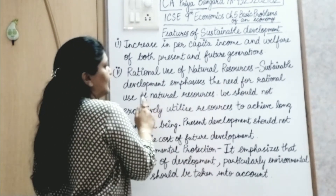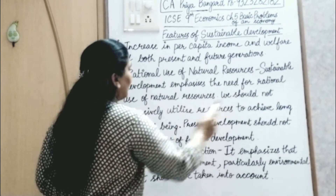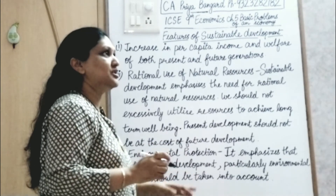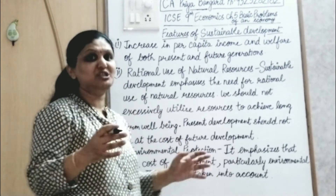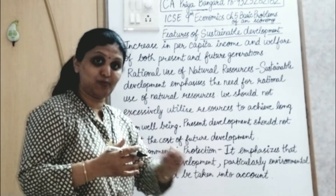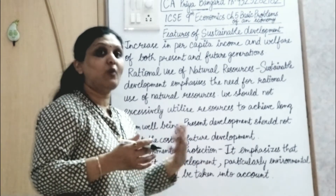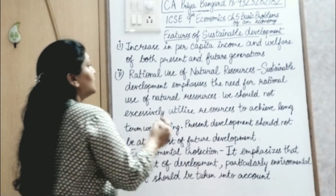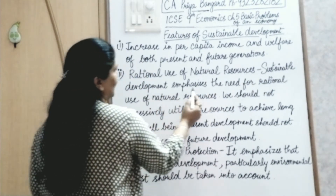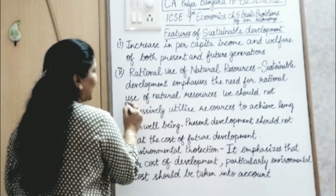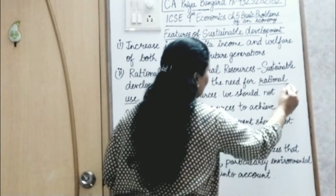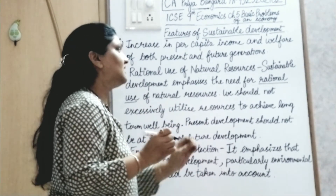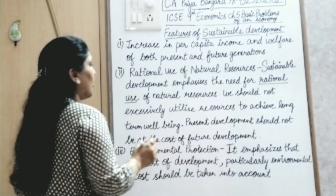The second feature is rational use of natural resources. Sustainable development emphasizes the need for rational use of natural resources because natural resources are finite. If we keep exploiting them, a day will come when future generations will be deprived of those resources. Rational use means using resources wisely and with common sense.